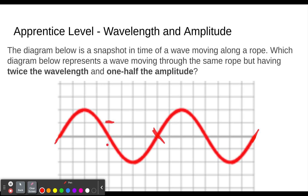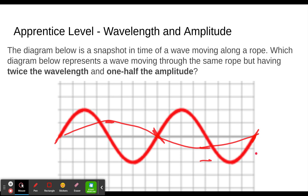To do both of those things, the crest — instead of being two squares later — will be four squares later. That makes the wavelength longer and the amplitude only one. So the trough lands right there, and the wave goes up, down, and back up. The new wave has twice the wavelength — 16 squares versus the original 8 — and the amplitude is now one instead of two. That's the apprentice level.